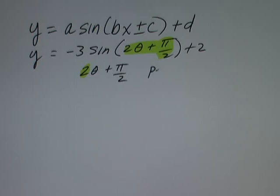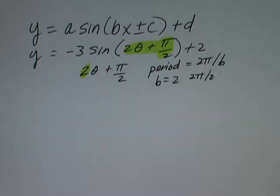Keep in mind that the period of sine and cosine is equal to 2π divided by b. In this case b = 2, so 2π divided by 2 equals π. So this function is going to cycle every π units, rather than a regular sine function which cycles every 2π.